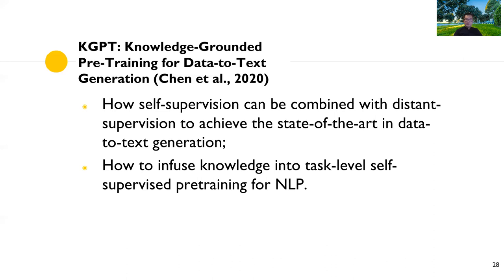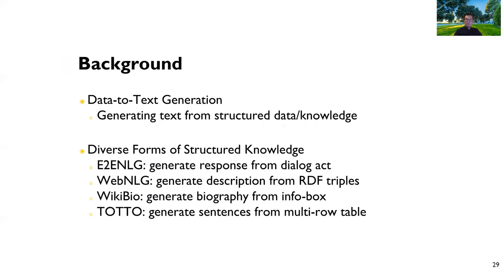Data-to-text generation is the task of generating text from structural knowledge — for example, tables or Wikipedia infoboxes. It can use diverse forms of structural knowledge. Well-known datasets include E2E (which uses Dialog Act), WebNLG (which uses RDF triples), and WikiBio (which generates Wikipedia biographies from infoboxes). The ToTTo dataset from Google generates sentences from multi-row tables. The best models achieve over 60 BLEU scores on some of these datasets.